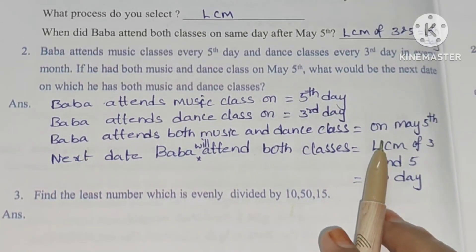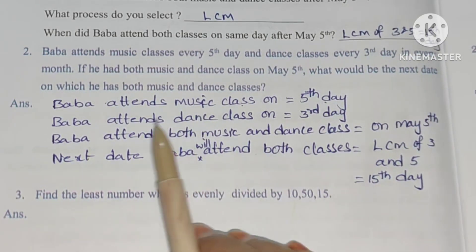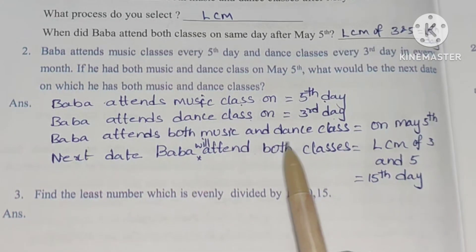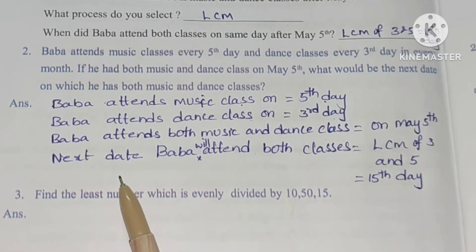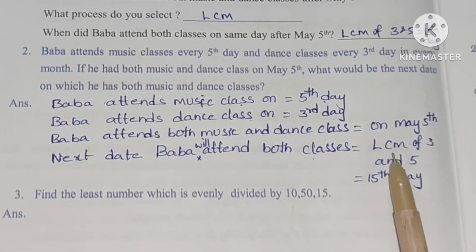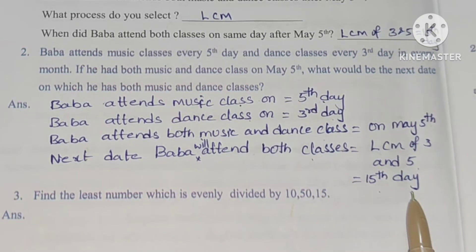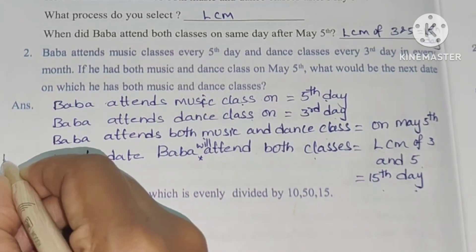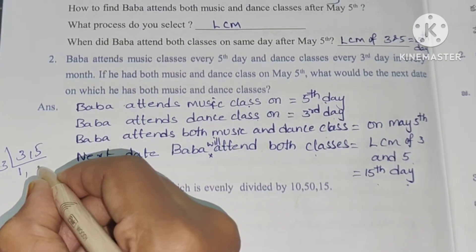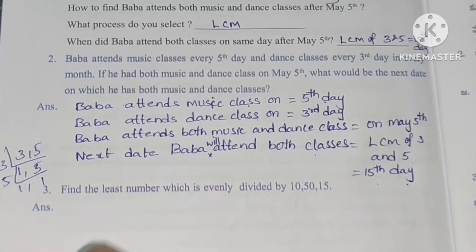Summary of steps: Baba attends music class on the fifth day, dance class on the third day, and both on May 5th. The next day Baba will attend both classes equals LCM of 3 and 5, which is 15. LCM of 3 and 5 is 3 × 5 = 15.